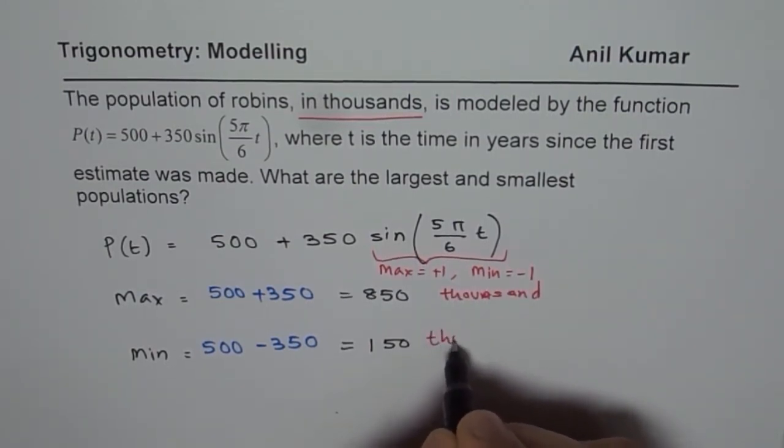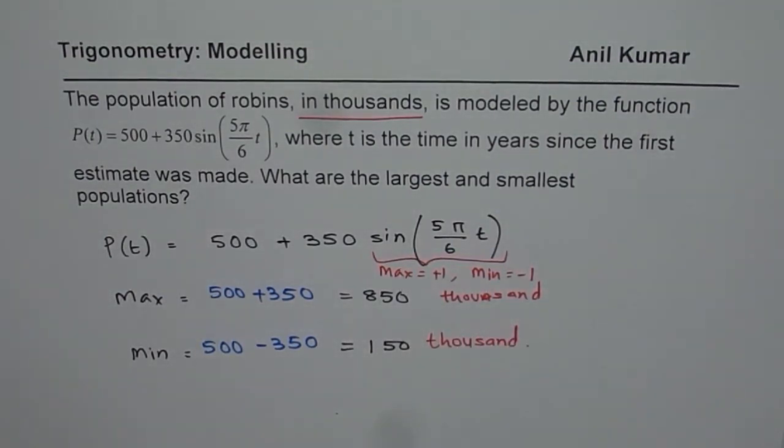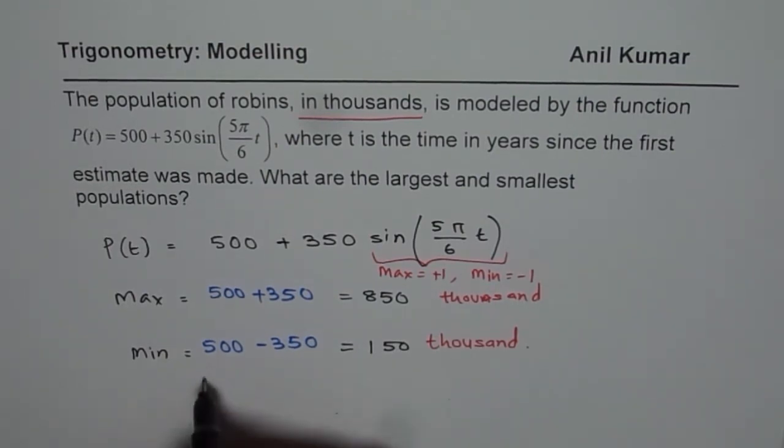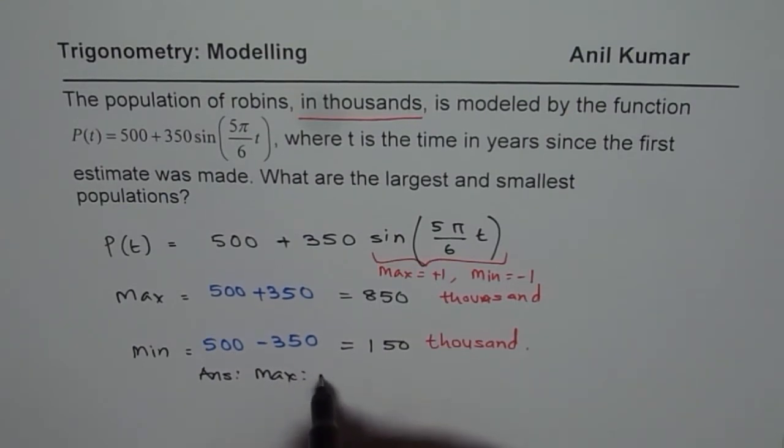That is very critical. Try to understand the question and answer accordingly. Our answer: the maximum number of birds will be 850,000.